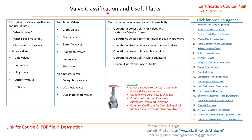In this section we are going to discuss valve classification and useful facts. We have divided it into five parts. First, classification — understanding what a valve is, its purpose, and various classifications. Under isolation valves: gate, ball, plug, butterfly, and DBB valves will each be discussed individually.